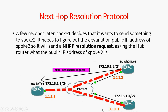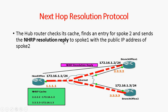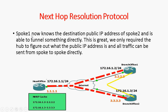Branch office 1 sends an NHRP resolution request to the NHRP server — the head office — to figure out the public IP address of branch office 2. The hub router checks its NHRP cache, finds an entry for spoke 2, and sends back an NHRP resolution reply to spoke 1 with the public IP address of spoke 2.